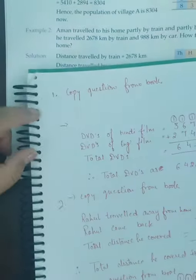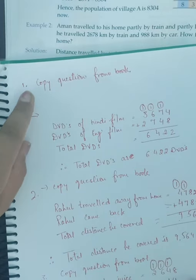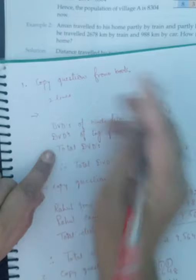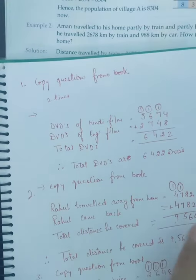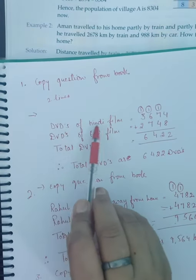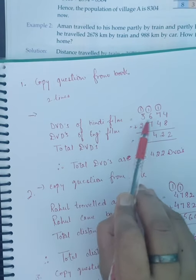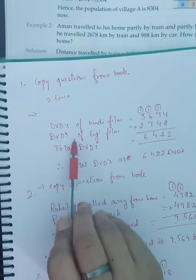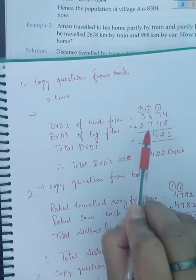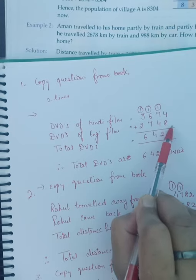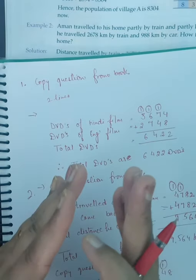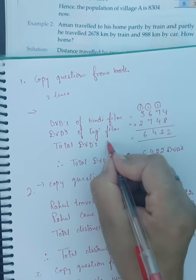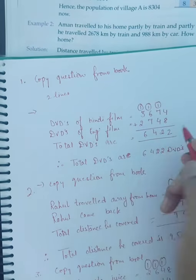You have to copy the question in the book, then after leaving two lines you start the solution. The first line we will write: DVDs of Hindi film = 3,674. DVDs of English film = 2,748. Now, total DVDs — we have to find that. Total DVDs are 6,422.